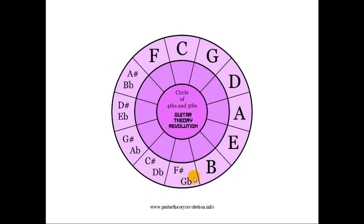What you want to do is stop relying on remembering it in one specific order and really get a visual image in your head of what the circle of fourths and fifths looks like. Because in later lessons we're going to look at relationships between the different notes — for example, between the C and the A. You want to be able to visualize that relationship; in this case it's a 90-degree angle between the C and the A.